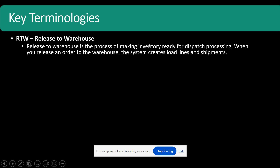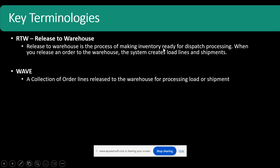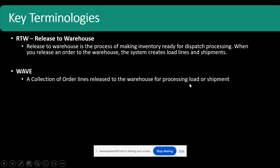Release to Warehouse is specific to individual order lines. This is where the concept of wave comes in. When you have a collection of order lines — let's say against multiple sales orders — and based on some grouping logic, you create a wave template. Based on that template, you process those order lines for shipment or load. In cases of singular processing of lines it generally refers to release to warehouse, but when processing a collection of order lines, sales orders, Kanban, or production orders, a wave is used for grouping purposes.